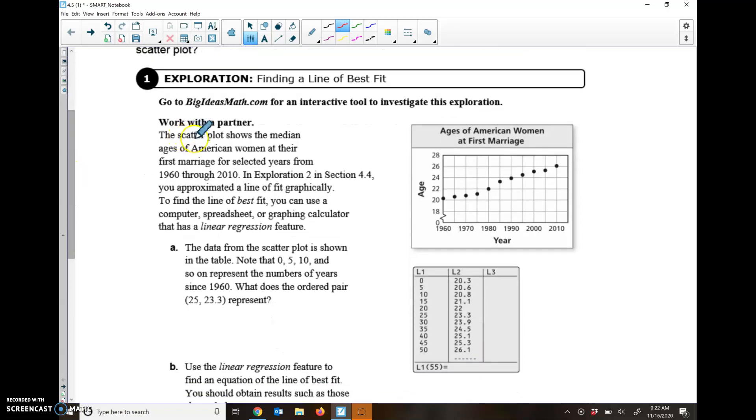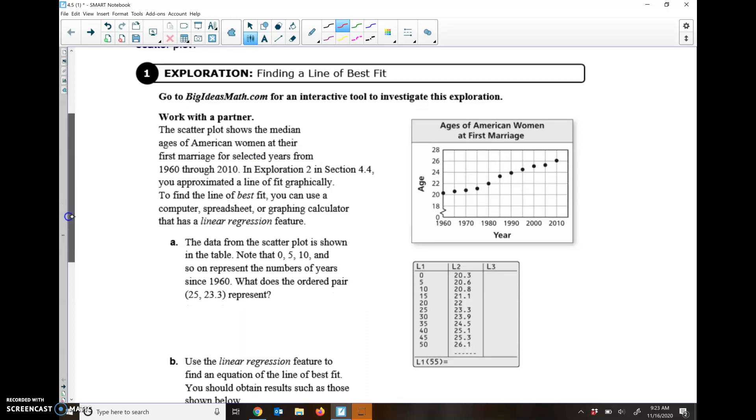For Exploration 1, the scatter plot shows the median ages of women at their first marriage for selected years from 1960 to 2010. In Exploration 2 in Section 4.4, you approximated the line of fit graphically. To find the line of best fit, you can use a computer spreadsheet or graphing calculator that has a linear regression feature.